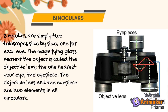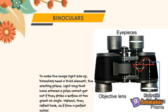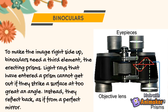Lastly, we have binoculars, which are simply two telescopes side by side — one for each eye. The magnifying lens nearest the object is called the objective lens, and the one nearest your eye is the eyepiece. These are two elements found in all binoculars. To make the image right side up, binoculars need a third element: the erecting prisms. Light rays that have entered the prism cannot exit if they strike a surface at too great an angle — instead, they reflect back as if from a perfect lens.